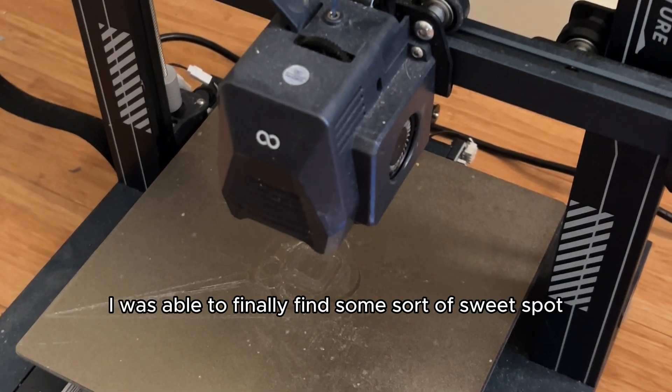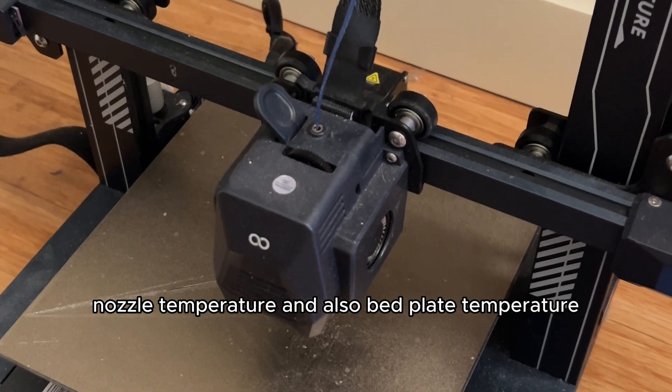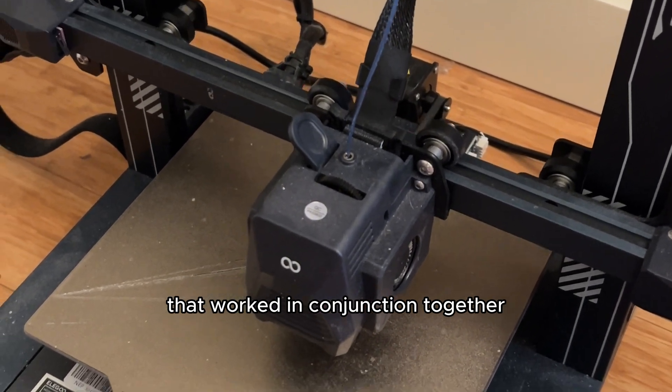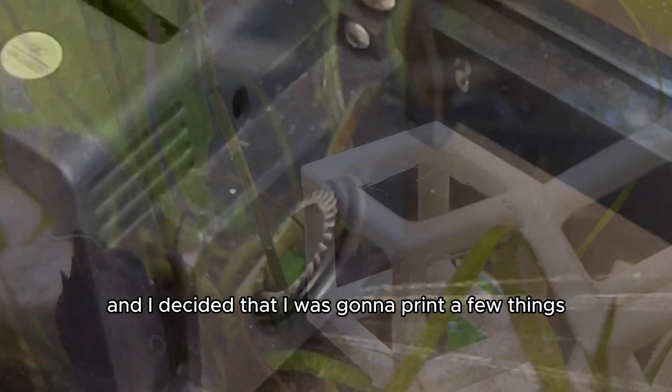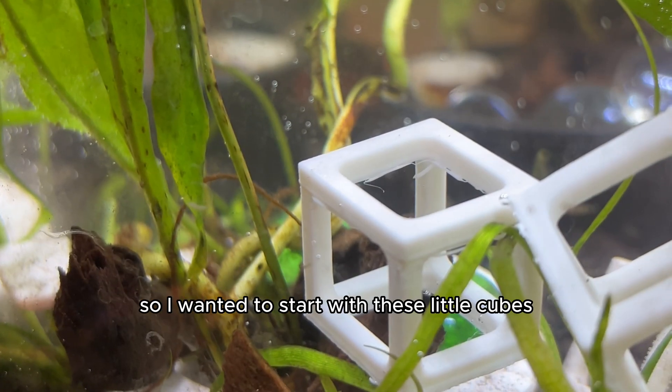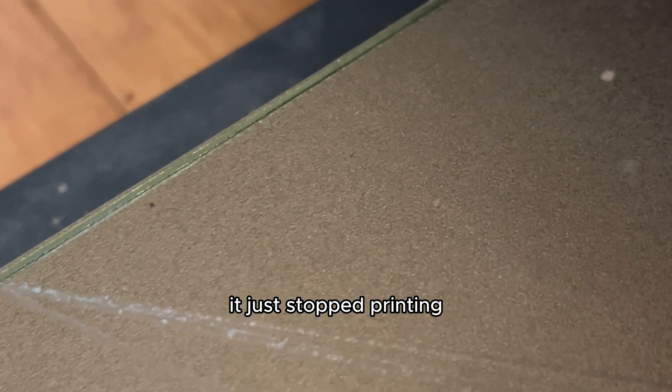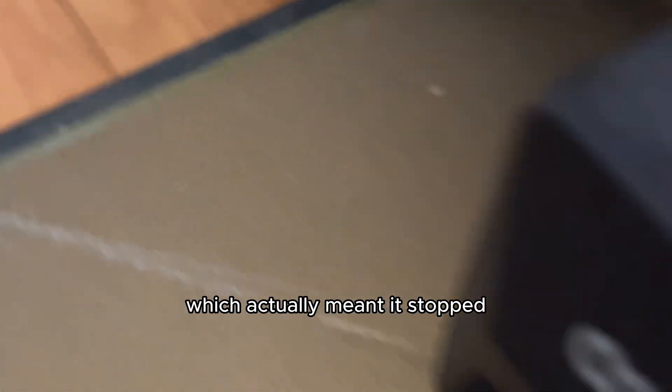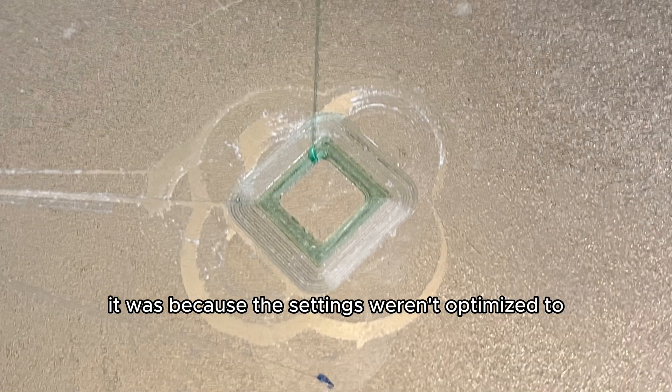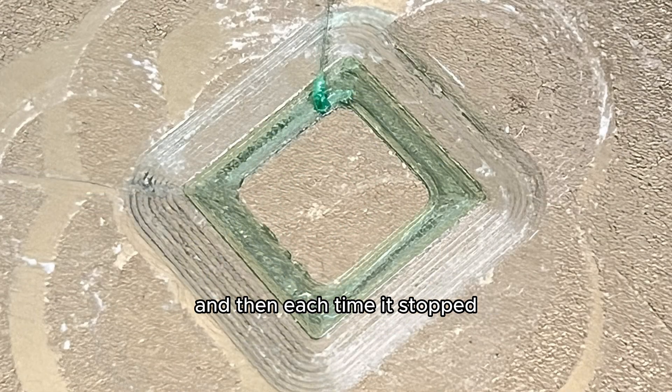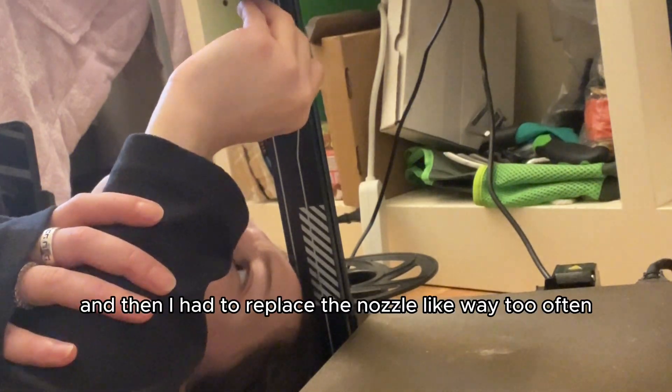I was able to finally find some sort of sweet spot nozzle temperature and also bed plate temperature that worked in conjunction together that melted the plastic enough to actually be able to print a little bit with it. I decided that I was going to print a few things for my shrimp tank and my garden. I wanted to start with these little cubes. In the middle of so many of the prints it just stopped printing, which actually meant it stopped extruding the water bottle filament. I figured it was because the settings weren't optimized to the exact numbers needed to print.